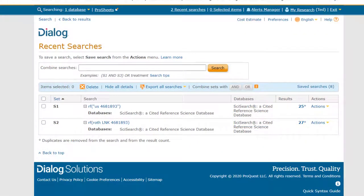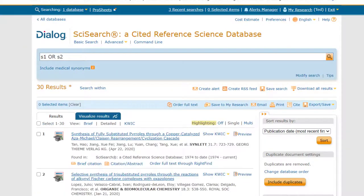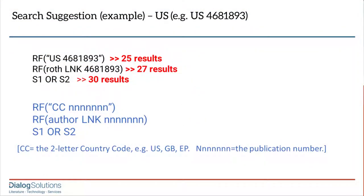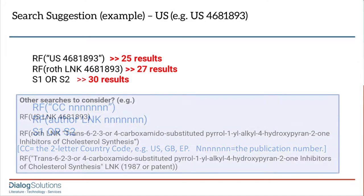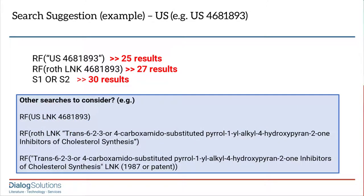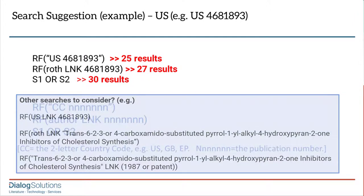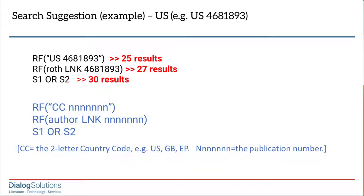Back to our strategy — after running these two searches, I can OR together the two sets of results, and this gets 30 hits, which as far as I can find is all of them. Based on what I've been showing you, you can try other combinations, run some test searches, and fine-tune your strategy, although in this case that didn't add anything new. For practical purposes, the strategy on this slide is a suggestion you can use as one good way to run the search.